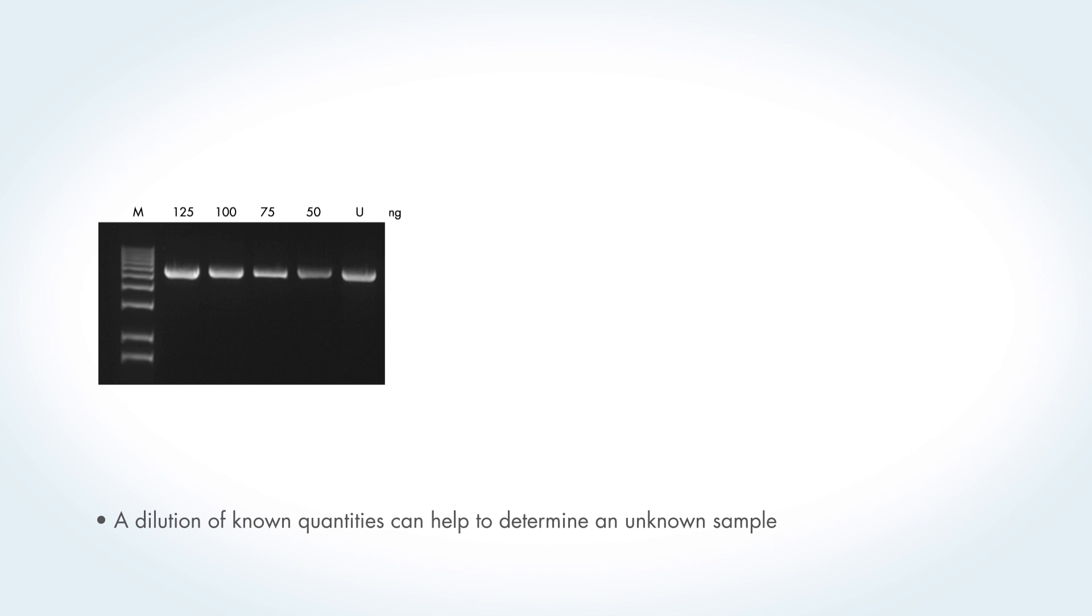If small bands are expected, it's better to load a bit more DNA, otherwise the ethidium bromide will not be able to intercalate so efficiently and the bands will be fuzzy. Where you don't know the amount of a certain fragment, you can load a dilution and estimate by visual comparison with a standard.